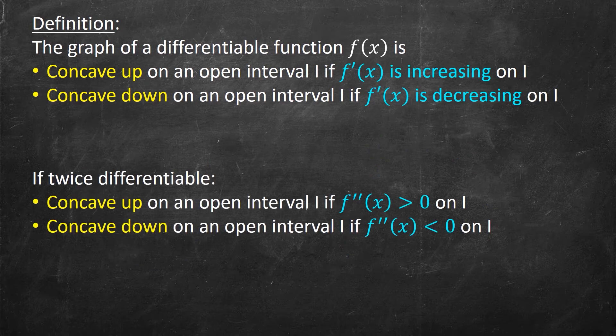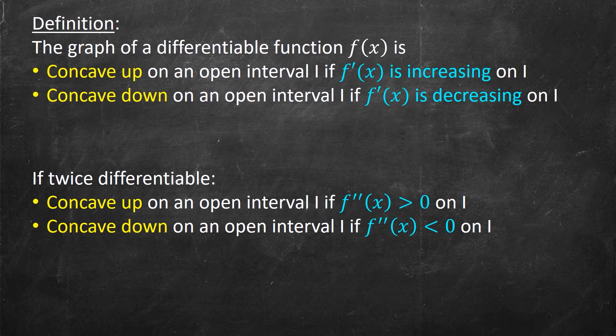I can say the exact same thing by going up a derivative. When I talk about the first derivative increasing, a function increasing (if it's differentiable) is equivalent to the derivative of that function being positive. So if I talk about the first derivative increasing, that is equivalent to saying the second derivative is positive. To restate: concave up refers to the second derivative being positive on an interval, and concave down refers to the second derivative being negative on the interval.